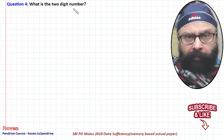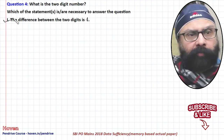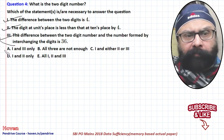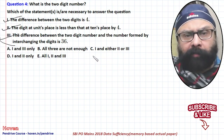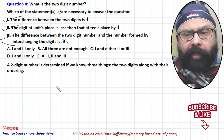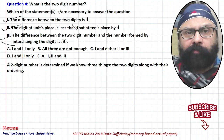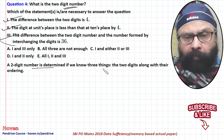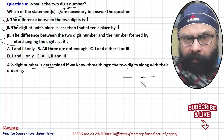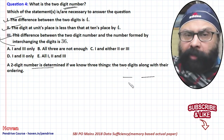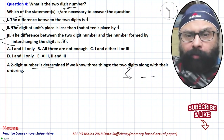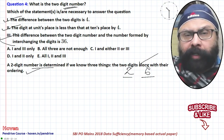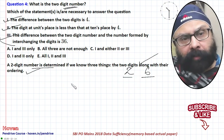The next question: what is the two-digit number? There are three statements and five options. A two-digit number is determined if we know the two digits independently along with their ordering — which digit comes first and which comes second.